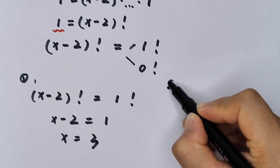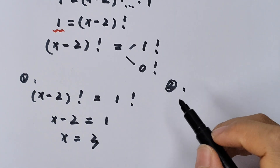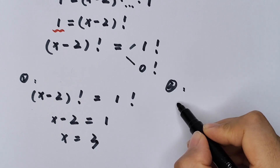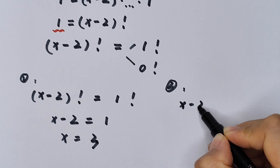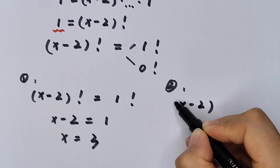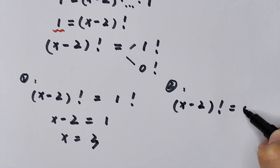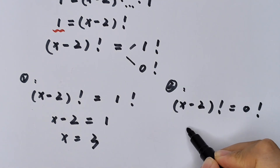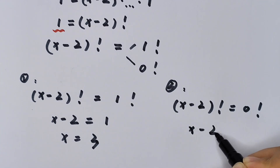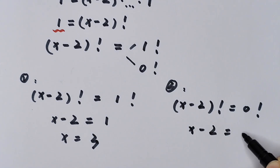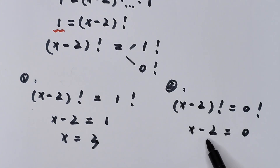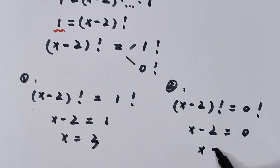Another case: (x - 2)! = 0! = 1, which means x - 2 = 0, so x = 2.